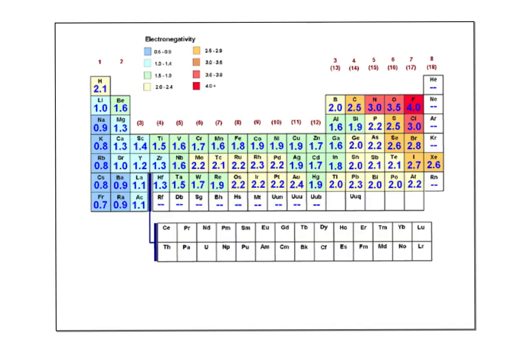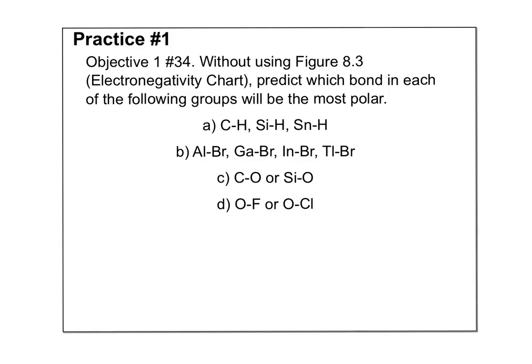To help figure that out, we can look at electronegativity charts. You have one in your book. But what we'll do, let's say for example oxygen is bonded to nitrogen. I would take the electronegativity of oxygen minus the electronegativity of nitrogen. The difference gives me the idea of if we have equal sharing, unequal sharing, or a full transfer. So it says without using figure 8.3, this is objective 1 number 34, helping you out with your problem set. They're basically saying without using the chart that I just showed you, predict which bond in each of the following groups will be the most polar.